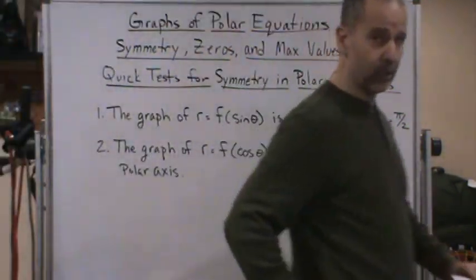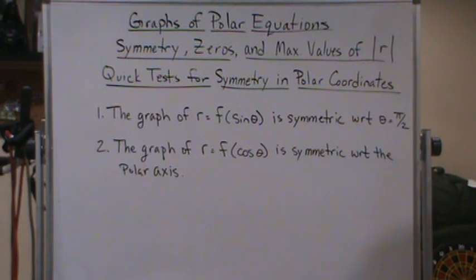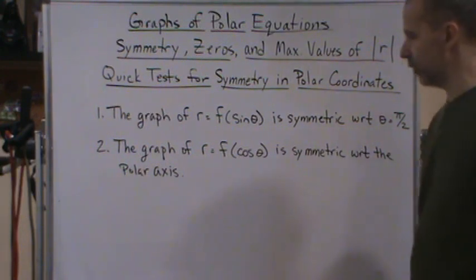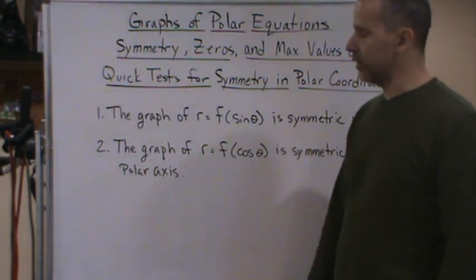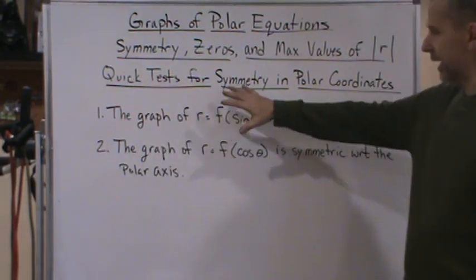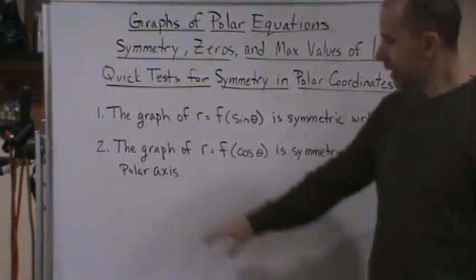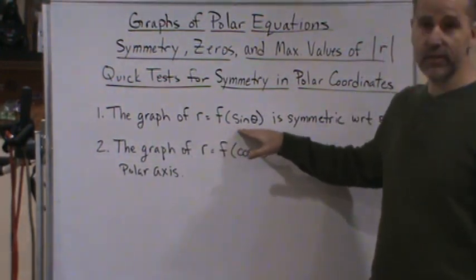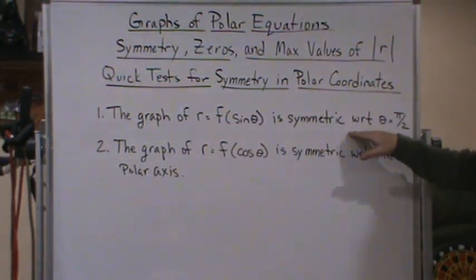All right, welcome back. Now here are the quick tests for symmetry. So based on what we talked about in the last couple videos, here's what the two tests are for polar coordinates. If we have a graph that's a function of sine theta, then we know that's going to be symmetric with respect to the line theta equals pi over 2.